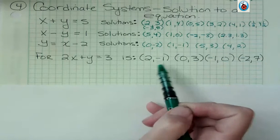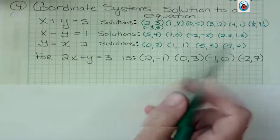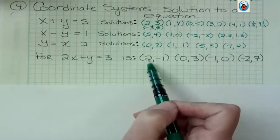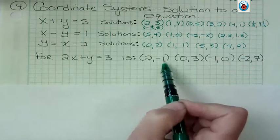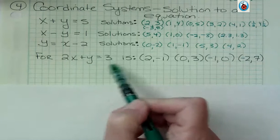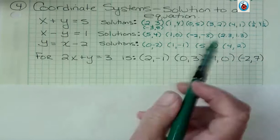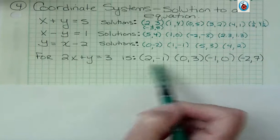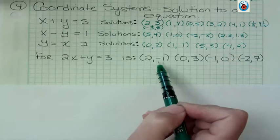So what I'm asking you to do is to say, if you make x 2 and y negative 1, will you get 3? Because if you do, then this is a solution. And if you don't, then it's not a solution.